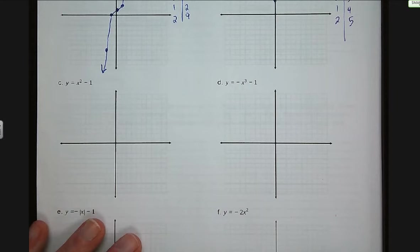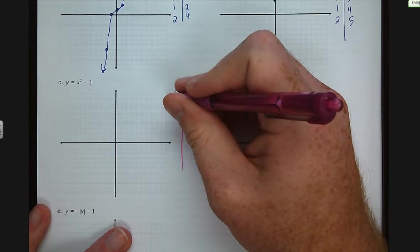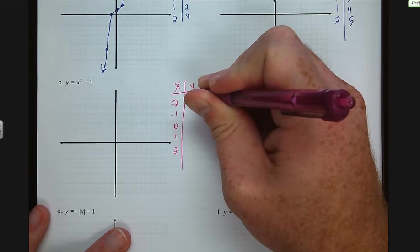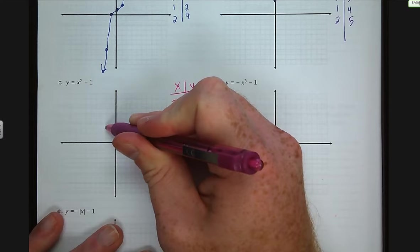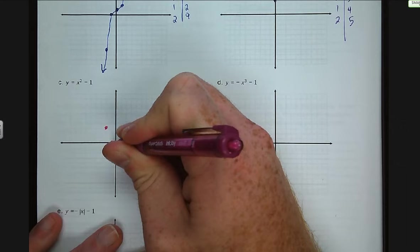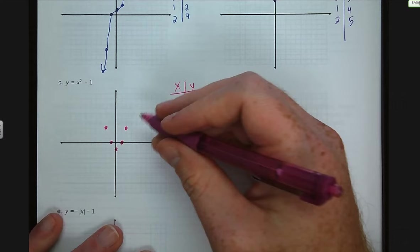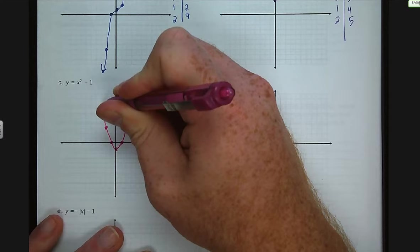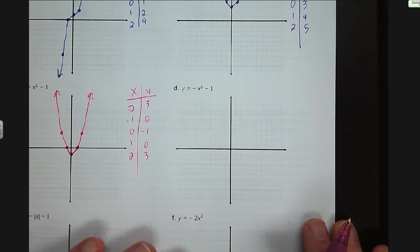Letter C — we have a quadratic or x-squared graph. We have x and y: negative two, negative one, zero, one, and two. Plug in your points and you get 3, 0, negative one, 0, and 3. I plot those points: negative two and three, negative one and zero, zero and negative one, one and zero, and two and three. An x-squared graph is going to be curved at the bottom and the lines become steeper. We're going to do a lot more work with graphing quadratics in chapters 8 and 9.